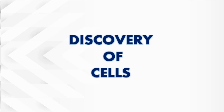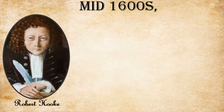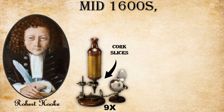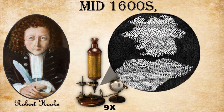Now let us talk about the discovery of cells. For this, we will have to go back to around the 16th century. There was a person called Robert Hooke. He had a microscope with a magnification power of 9x. One fine day, he took a slice of cork — cork is the bark of a tree, used in wine bottles. He cut a small slice of cork and observed it under the microscope. He found out that the cork structure is like a honeycomb made up of small connected units, and he named these small units 'cells.'